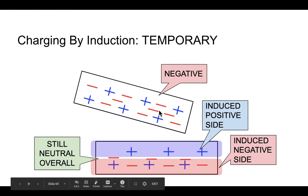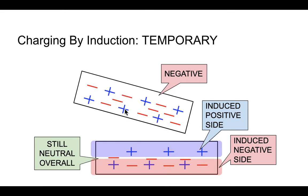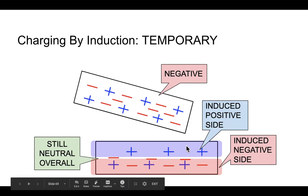What's important though is that this positive side ends up getting attracted to this negatively charged object. And that's the reason why these two objects are attracted to each other, even though this thing is still a neutral object.